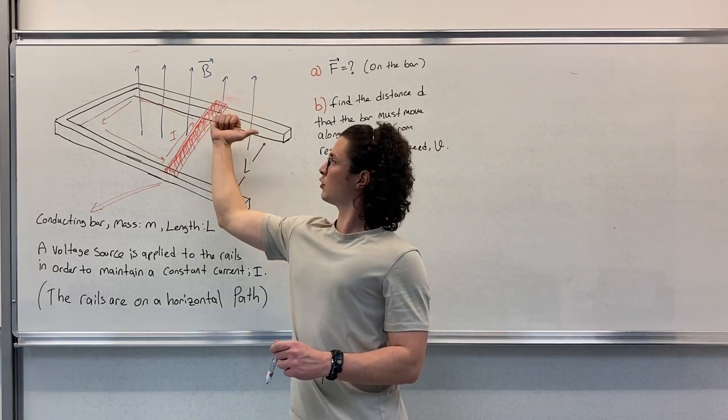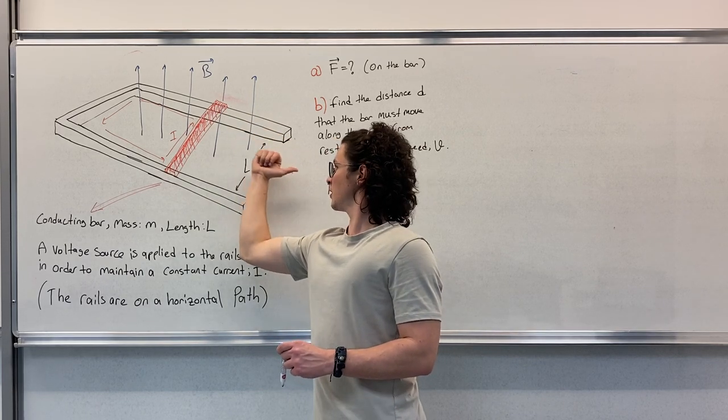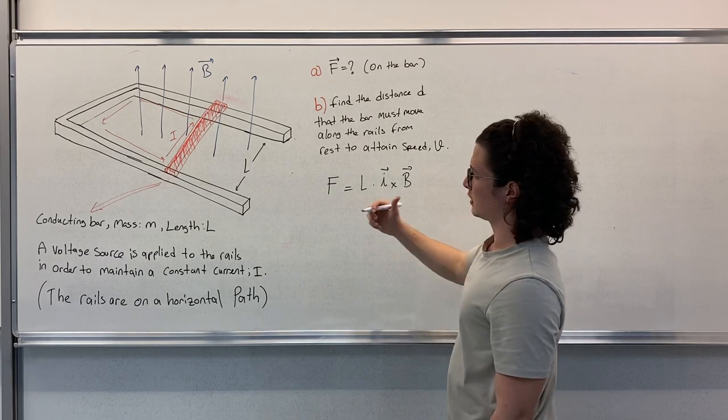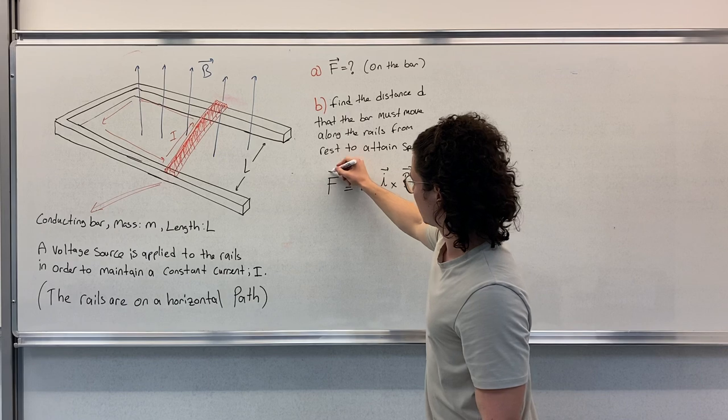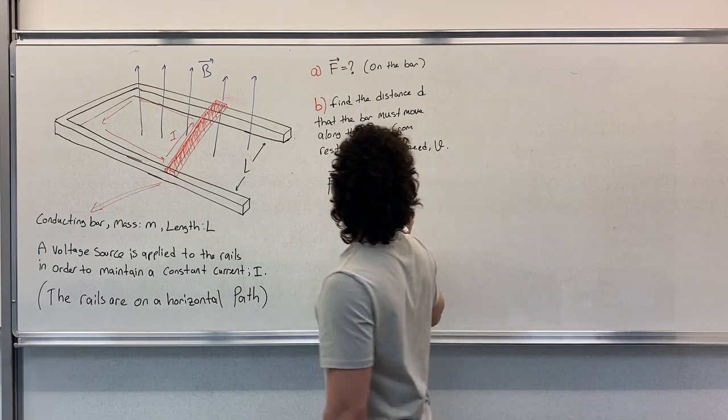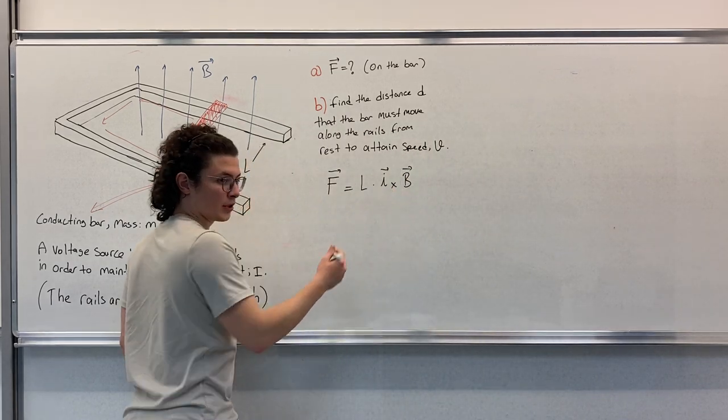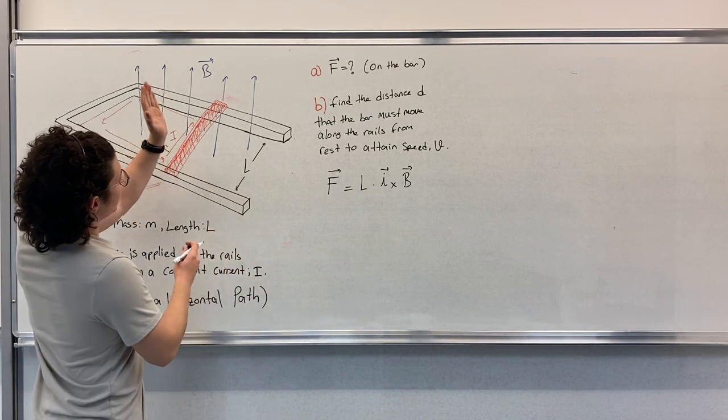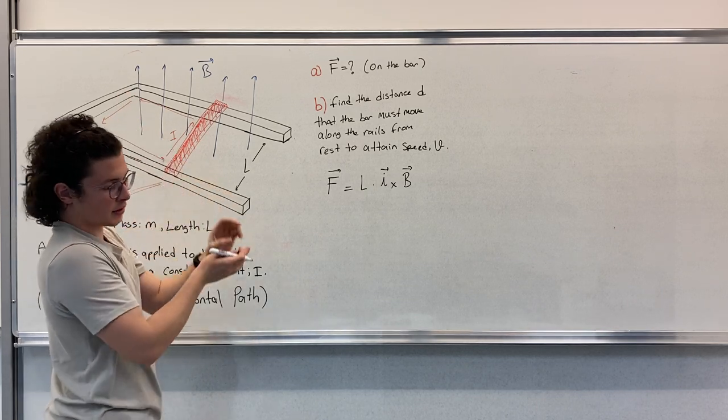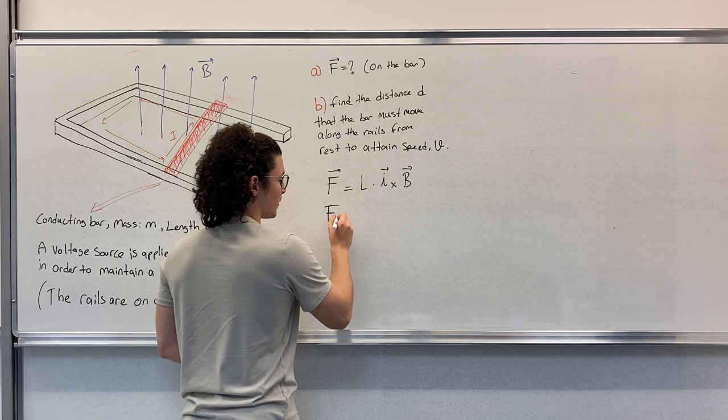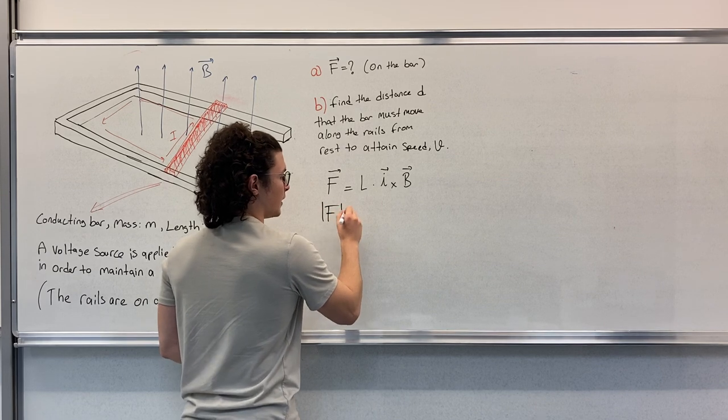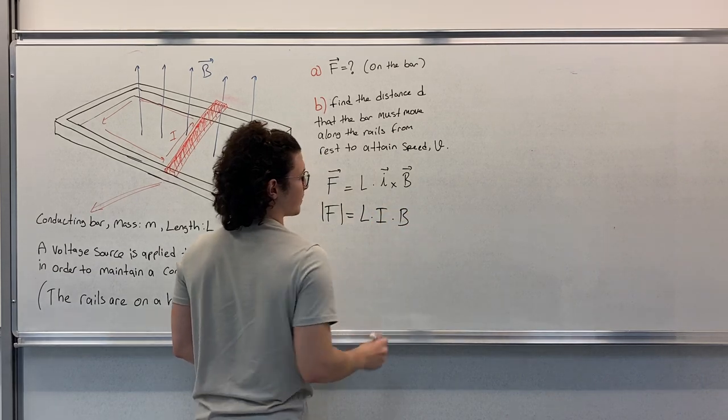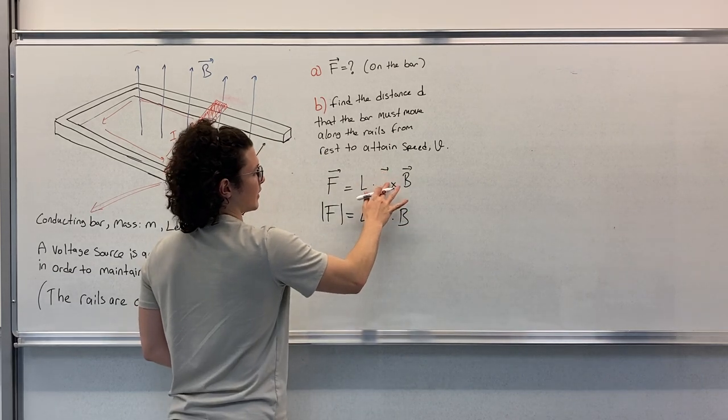This means I is pointing in this direction, B is pointing in that direction, so the cross product gives us the force in this direction. Our direction is to the right, this is vector F. This cross product becomes one because B and I are always perpendicular to each other. Therefore, we can write the magnitude F as L times I times B.